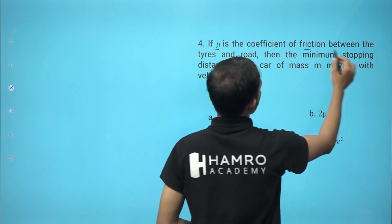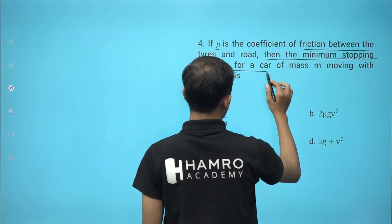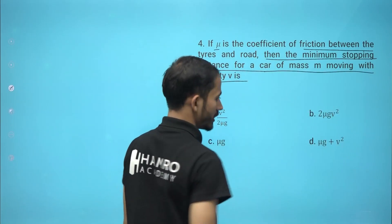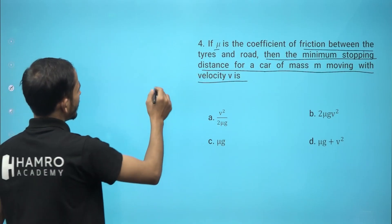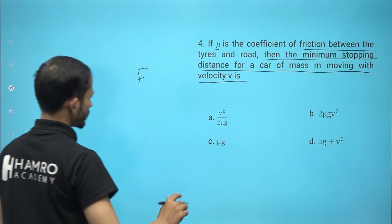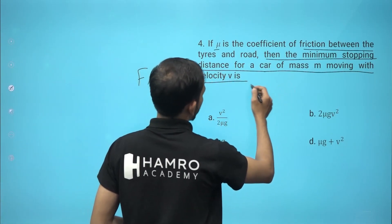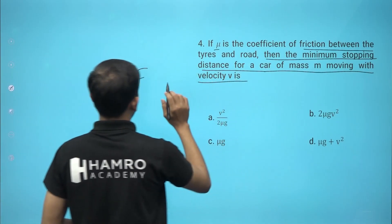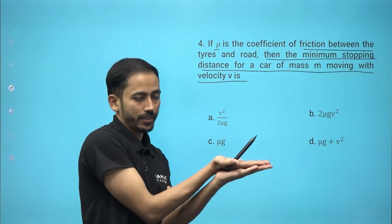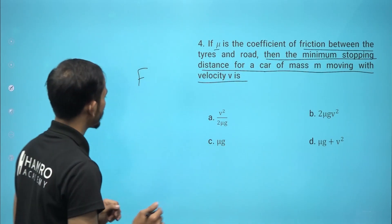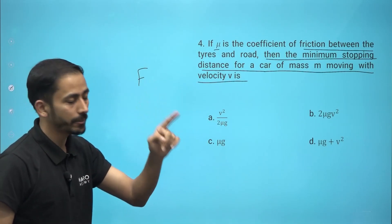Next question: if mu is the coefficient of friction between tires and road, find the minimum stopping distance for a car of mass m moving with velocity v. When the brake is applied, the engine stops and the frictional force causes deceleration — acceleration in the negative direction.